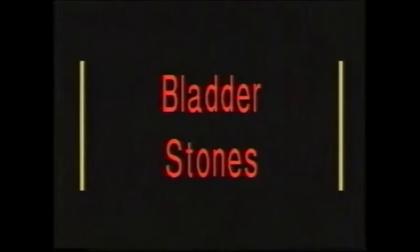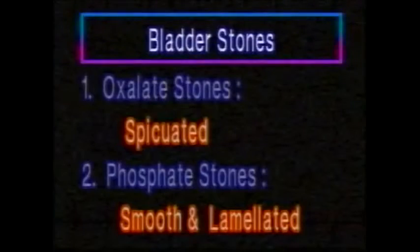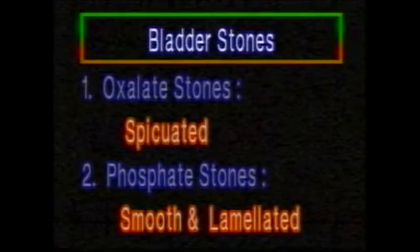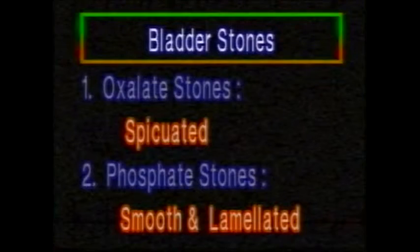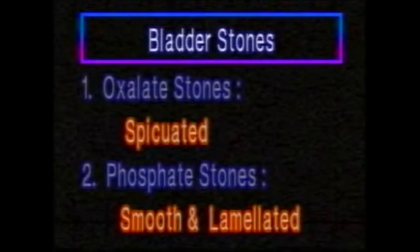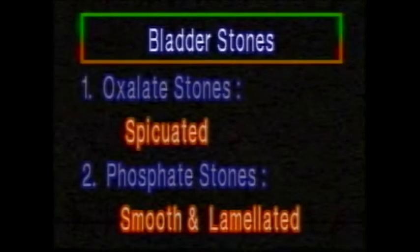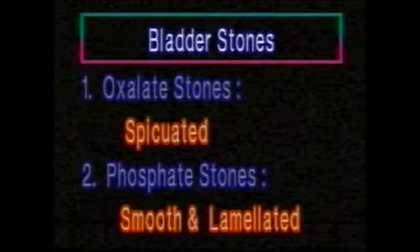Bladder stones are almost always radio-opaque and very often show a typical lamellated appearance. There are two common types of stones in the bladder: oxalate stones, which are spiculated, and phosphate stones, which are smooth and lamellated.